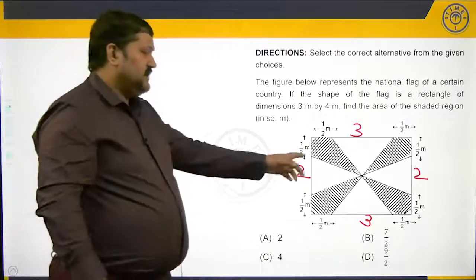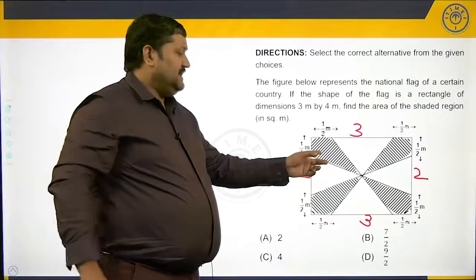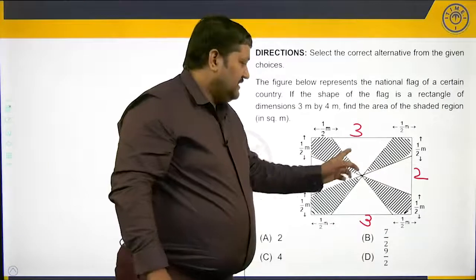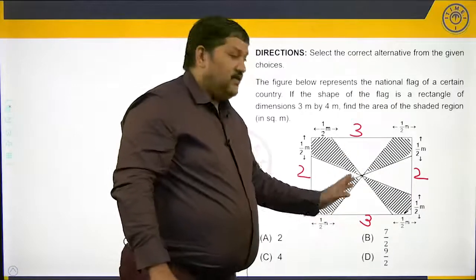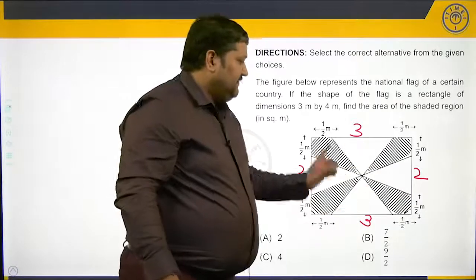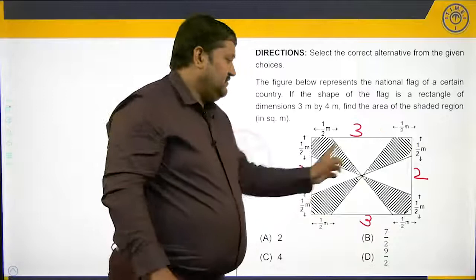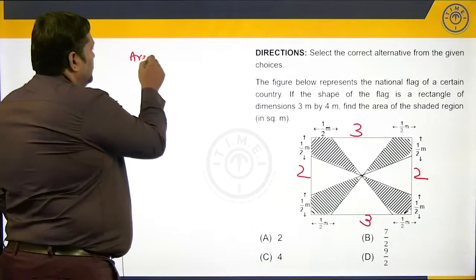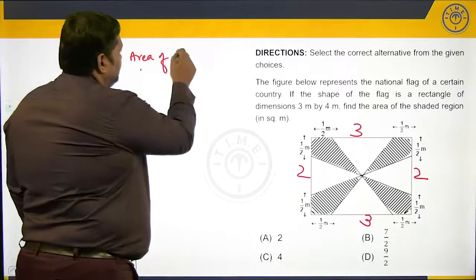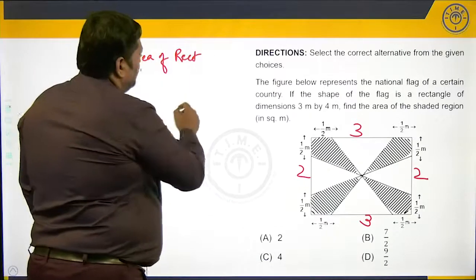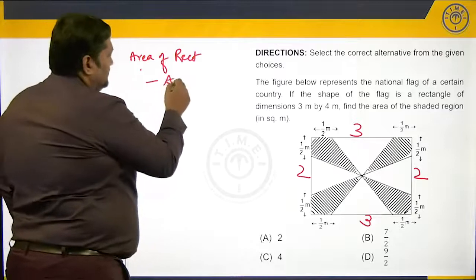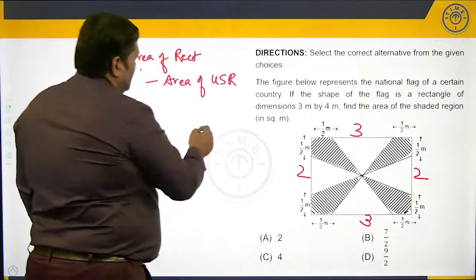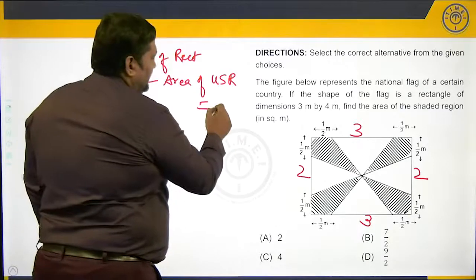We are interested in the area of the shaded region. Instead of finding the area of the shaded region directly, we can find the area of the unshaded region very easily, because it is nothing but the sum of the area of 4 triangles. If we subtract the area of the unshaded region from the area of the rectangle, that gives us our answer: area of rectangle minus area of unshaded region.